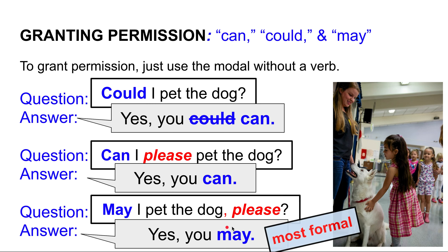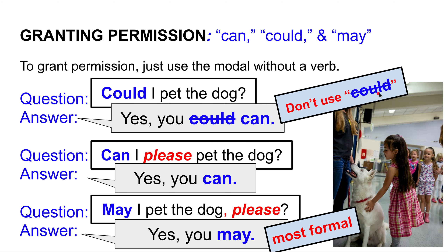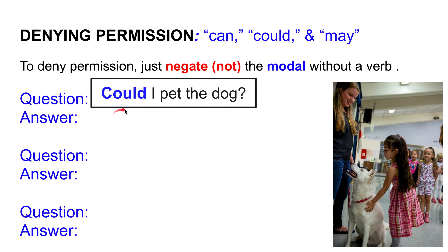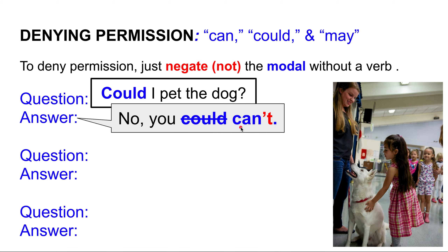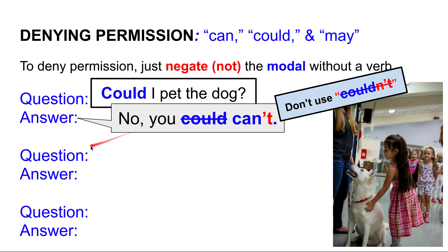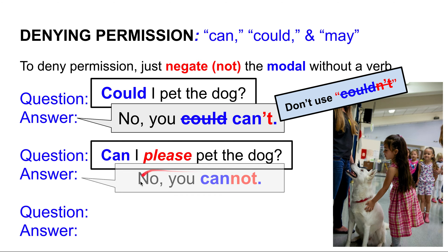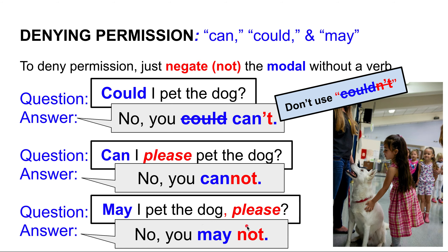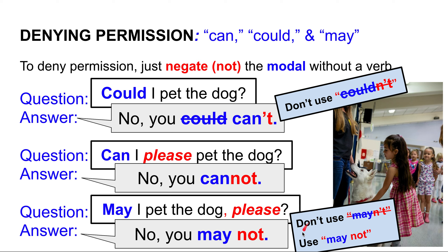Note: 'may' is very formal. Don't use 'could' to grant or deny permission — it's used for unreal or past situations. To deny permission, negate the modal without adding a verb. For example: 'Could I pet the dog?' — 'No, you can't.' 'Can I please pet the dog?' — 'No, you cannot.' 'May I pet the dog?' — 'No, you may not.' There is no contraction for 'may not' — 'mayn't' doesn't exist.